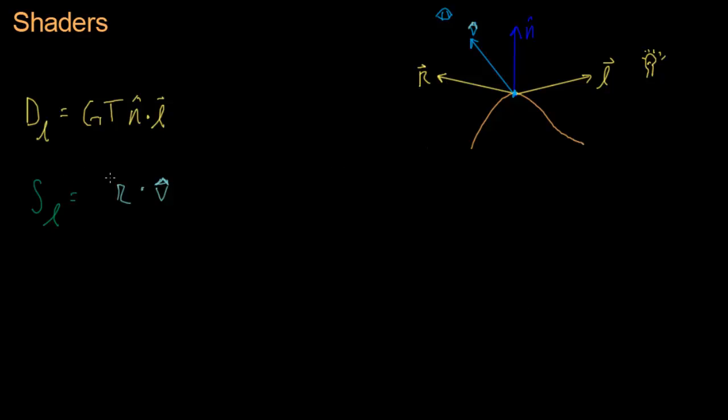And there's one more thing I have to do here, which is give it an exponent, which I'm going to call A. A depends on the material, whatever the properties of the material are. A very shiny object will have a very high specular term.